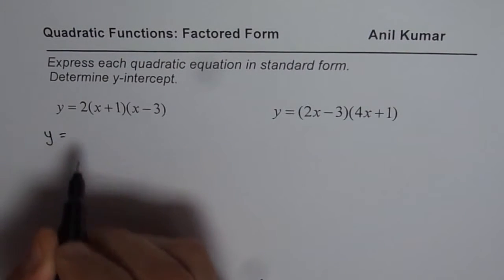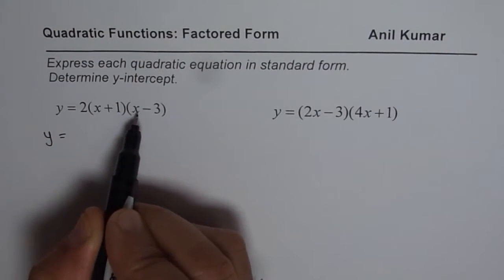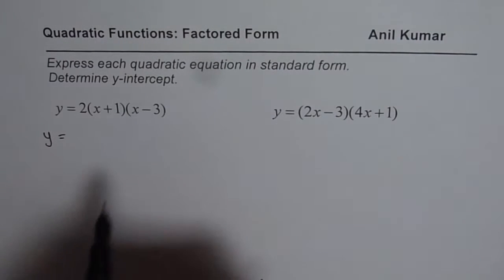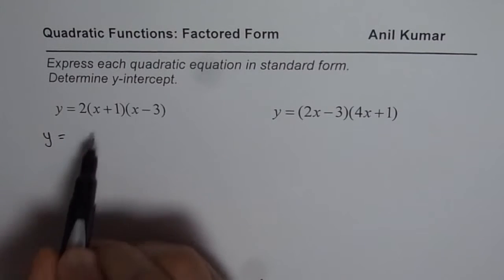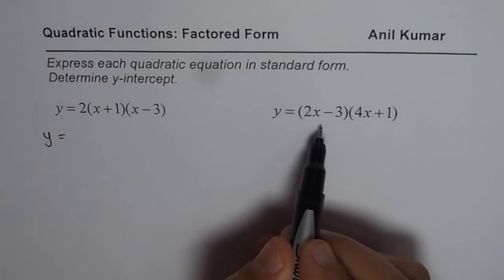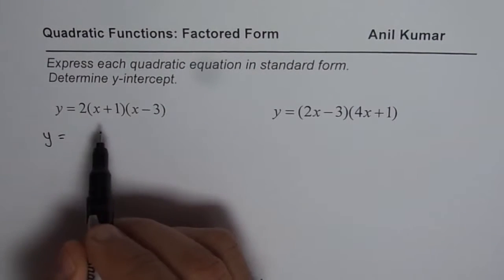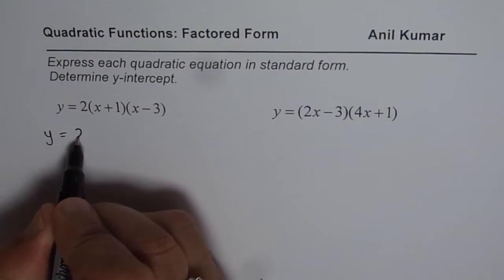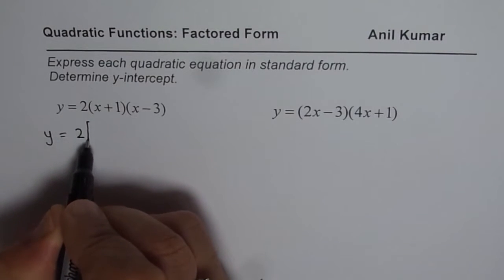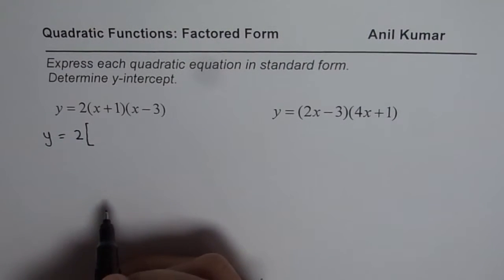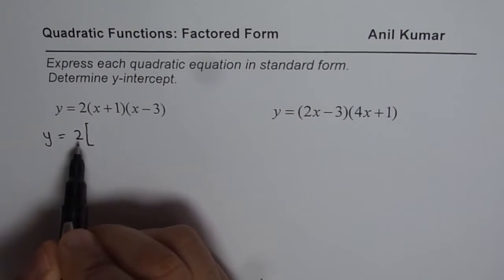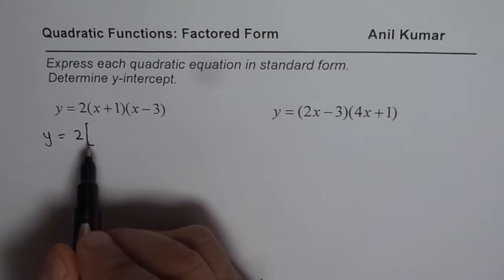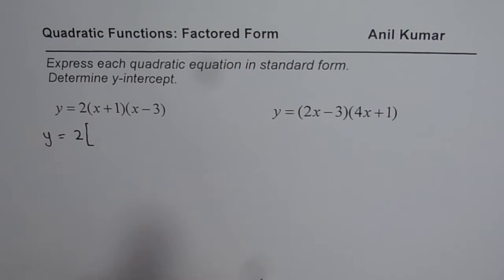The first equation is y equals 2 times (x plus 1) times (x minus 3). A common question is: should I multiply by 2 first, or multiply by 2 later? Since we already have the number 2 outside the brackets, we will multiply by 2 later. I'll use square brackets to indicate this — we will multiply the binomials first, and then multiply each term by 2. This helps since we work with smaller numbers.